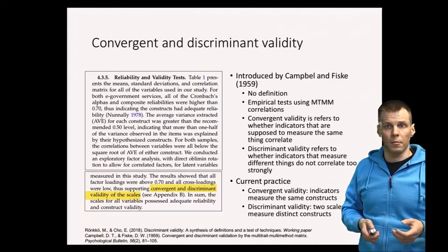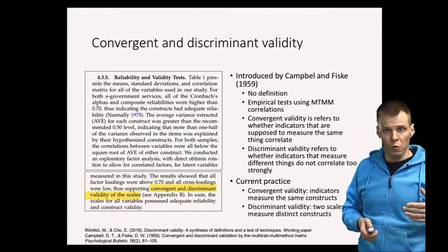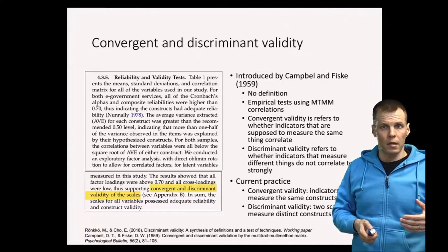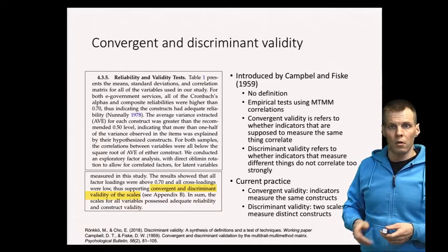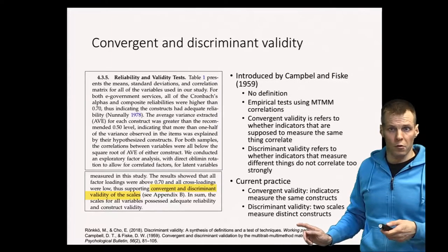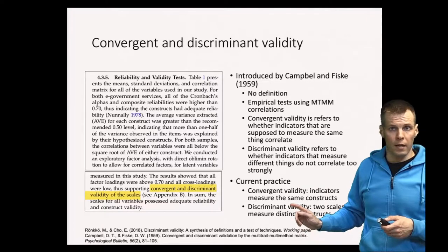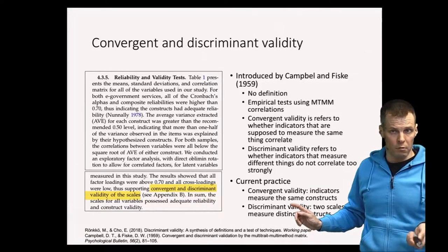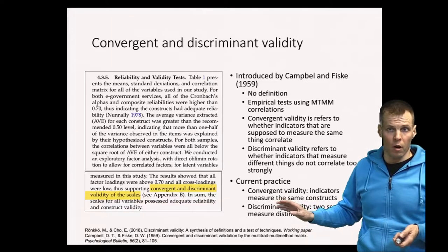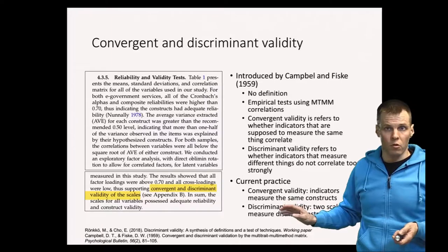So the current practice is that discriminant validity refers to whether two scales measure distinct constructs. If two scales measure the same construct, they don't have discriminant validity. Convergent validity refers to whether indicators measure the same construct, so it's kind of used as a synonym for internal consistency.